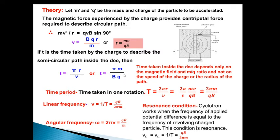So this is its principle. Now the time period, time taken in one rotation, that will be T = 2πr/v, and if we substitute the value of r, it will be 2πm/qB. So the linear frequency will be the reciprocal of time period, and that is qB/2πm. We know the angular frequency, which is 2πν or 2π/T, its value will be qB/m. Now the cyclotron works when the frequency of applied potential difference, means the oscillator's frequency, is matched with the frequency of revolving charged particle. This condition is resonance.